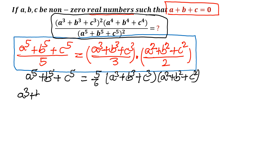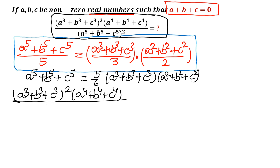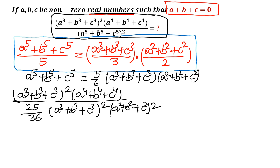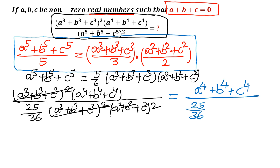So I will write A cubed plus B cubed plus C cubed, whole square, over A to the power 4 plus B to the power 4 plus C to the power 4. If I take the square, it will become 25 over 36 in the denominator, and then A cubed plus B cubed plus C cubed whole squared — the terms cancel out — times A squared plus B squared plus C squared, whole square. Now I can easily cancel these two terms.